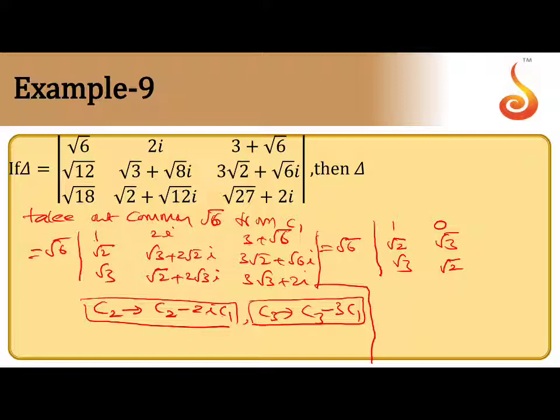Next, C3 as C3 - 3·C1. So 3 + √6 - 3·1 gives √6. Next, 3√2 + √6i - 3√2, 3√2 cancels, you get √6i. Next, 3√3 cancels, you get 2i. After applying row operations, we got this answer.